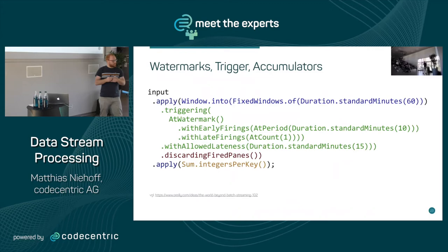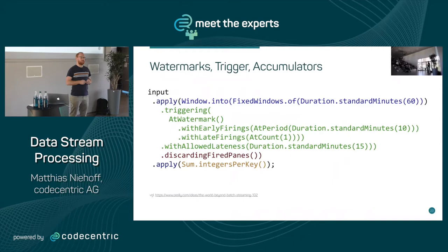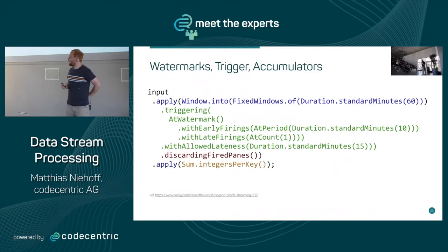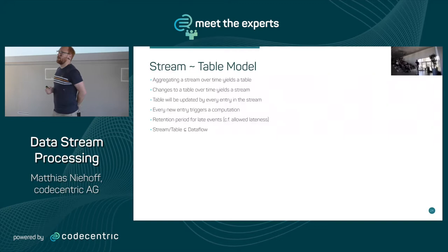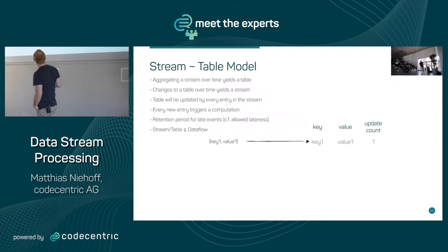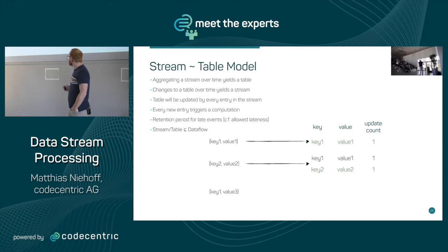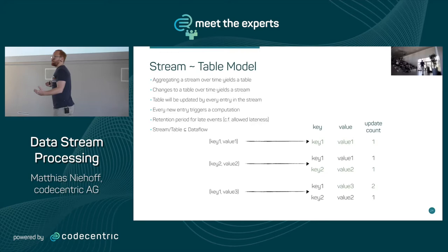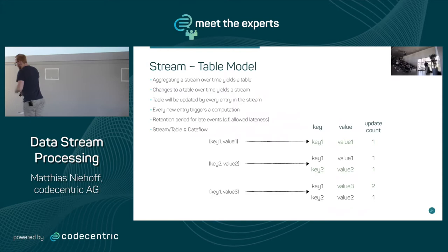So this gives a comprehensive way to handle a stream however you need. Then there's the stream and table model — I'll give a sneak peek because Tim will go into more detail, since that's the model Kafka Streams uses. Basically, every entry in a stream can be mapped to a table and vice versa. A stream comes in with a key-value pair represented in the table; another value updates the table, another entry for the same key just updates it. Events come in, every event updates the table and gives the result.